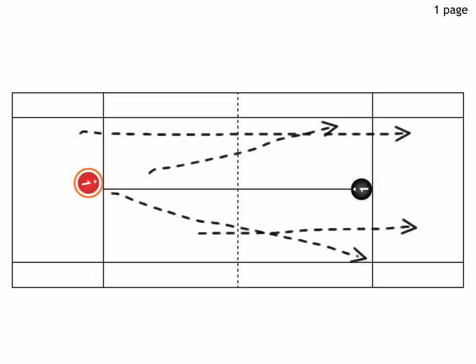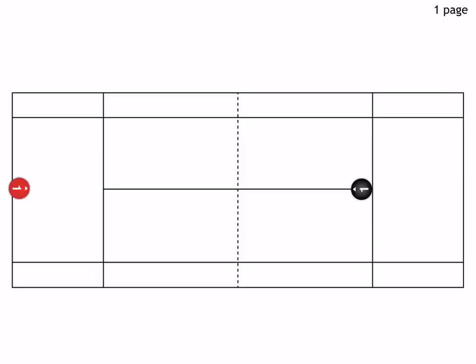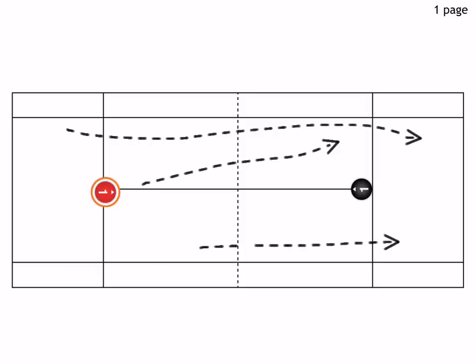So approach shots either backhand or forehand, one volley, approach shot, volley, and then two overheads. And then the sequence starts again.